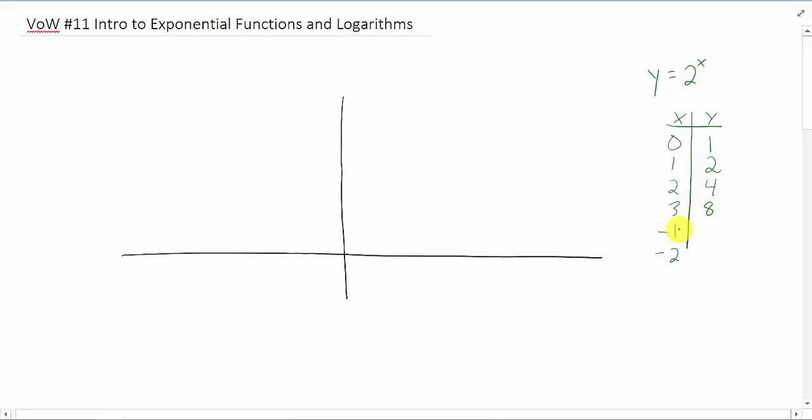If you plug in a negative number for x, you get a negative exponent. You might have to go back and review your negative exponents. But if you plug in x equals negative 1, you get 1 half. And if you plug in x equals negative 2, you get 1 fourth.